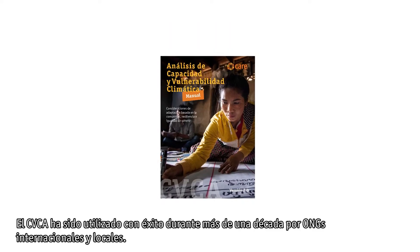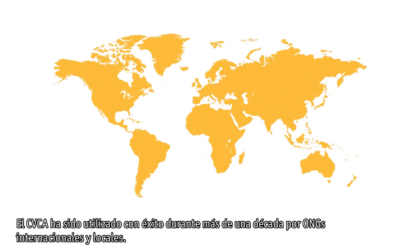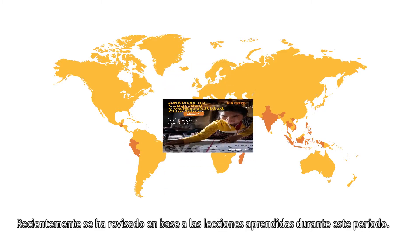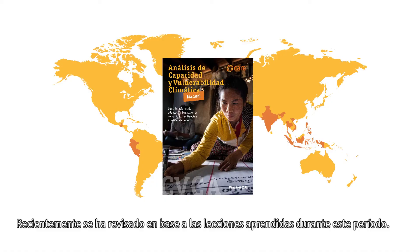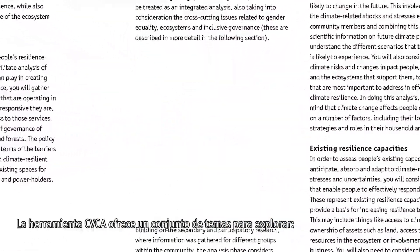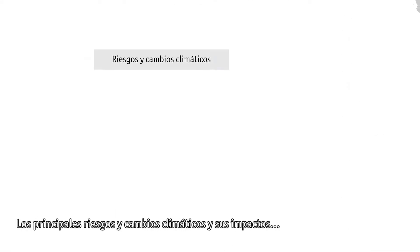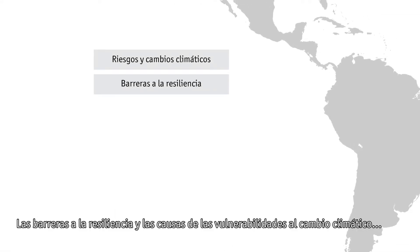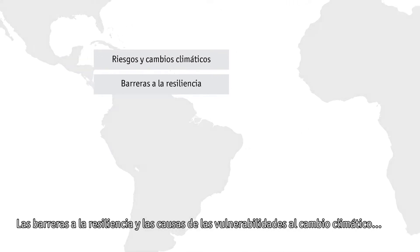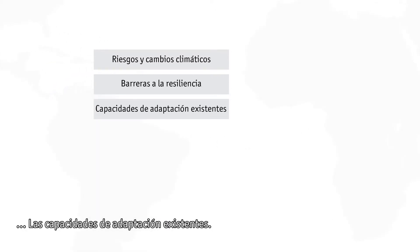The CVCA has been used successfully for over a decade by international and local NGOs. It has now been revised based on lessons learned over the period. The CVCA tool proposes a set of guiding themes to explore key climate risks and changes and their impacts, barriers to resilience and the causes of vulnerability to climate change, and existing capacities for adapting to climate change.